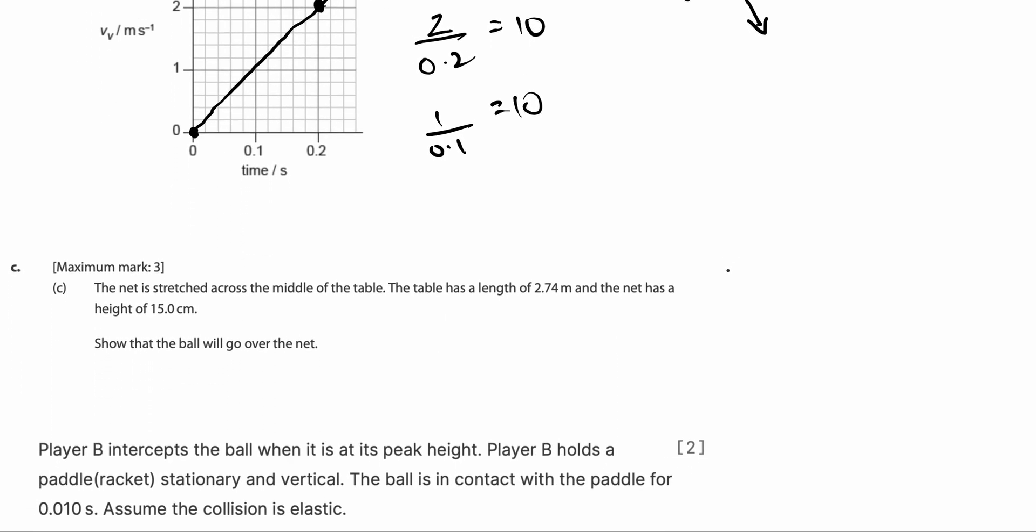Question 3. This net is stretched across the middle of the table. The table has a length of 2.74 meters and the net has a height 15 centimeters. Show that the ball will go over the net. Again, this is a projectile motions question. We have a table of 2.74 meter length. Where would the net be on a table tennis table? Of course, in the middle. So we know that the distance to the net would be 2.74 divided by 2, which is 1.37 meters.